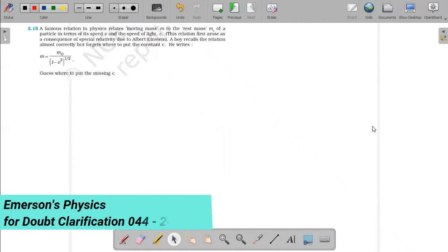One simple question, number 2.15, is very simple. A famous relation in physics relates moving mass to the rest mass.